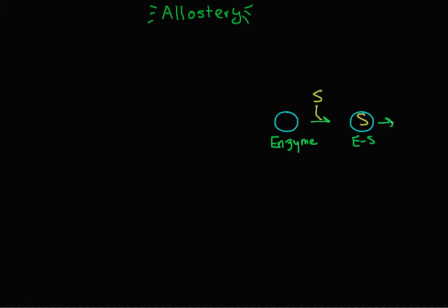The enzyme-substrate complex can go to products. But in allostery, the enzyme exists in at least two conformations. The one that can bind substrate and catalyze a reaction is the active form, and the one that doesn't bind substrate or catalyze the reaction is called the inactive form. These two forms of the enzyme can exchange between one another.